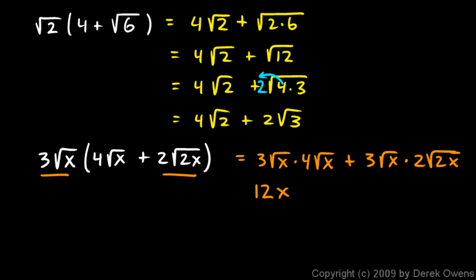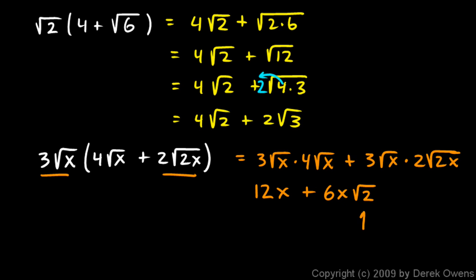Then I have 3 times 2 which is 6, and the square root of x times the square root of x gives x, and I still have this square root of 2. So that's 6x times the square root of 2. The answer is 12x plus 6x square root of 2. I can't combine these terms even though I have 12x and 6x, because this second term is also a radical term, not just an x term.